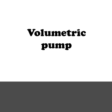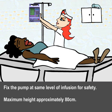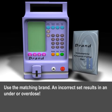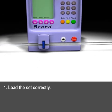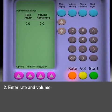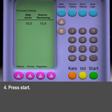Volumetric pump setup: Fix the pump at the same level as the infusion for safety, with a maximum height of approximately 80 centimetres. Use the matching brand — an incorrect set results in an under or overdose. Load the set correctly, enter rate and volume, then check the drip chamber and press start.